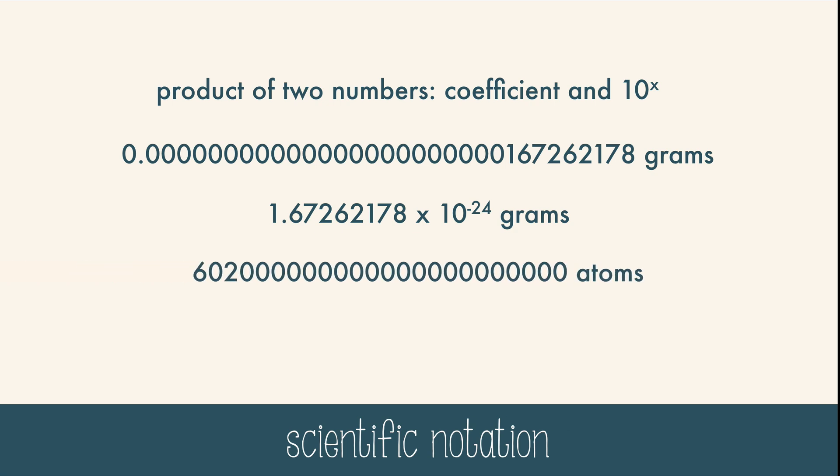Here's another example. This number is very large and we need to move the decimal to the left 23 spaces so that there's only one digit in front of the decimal. Scientific notation is much tidier and faster to write.